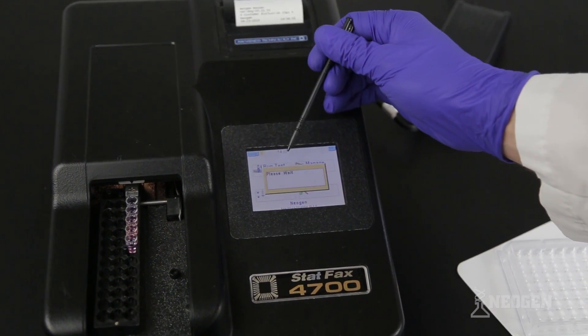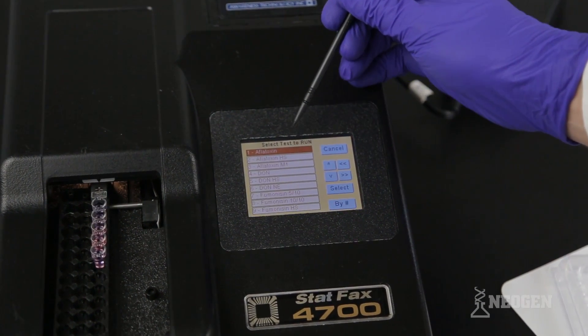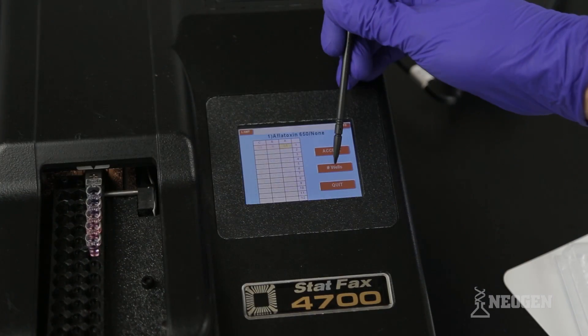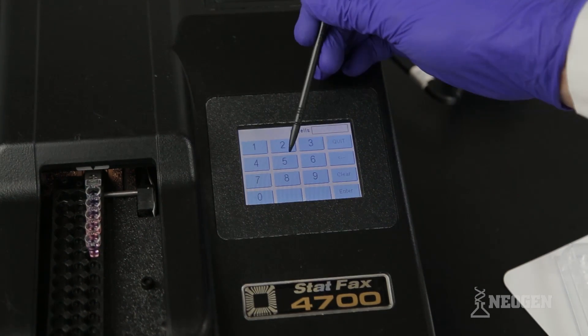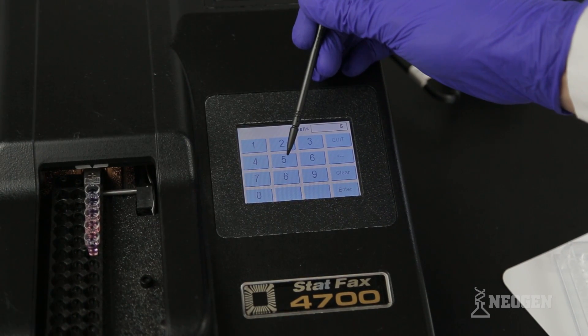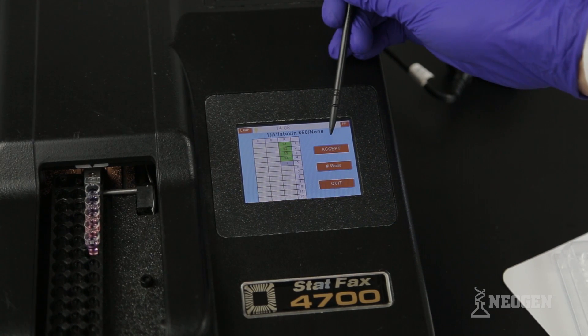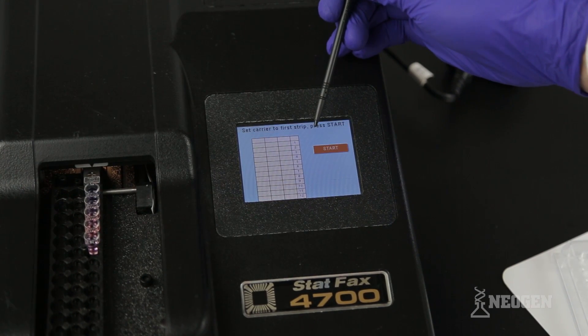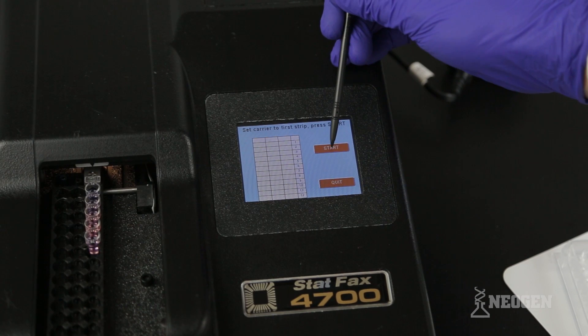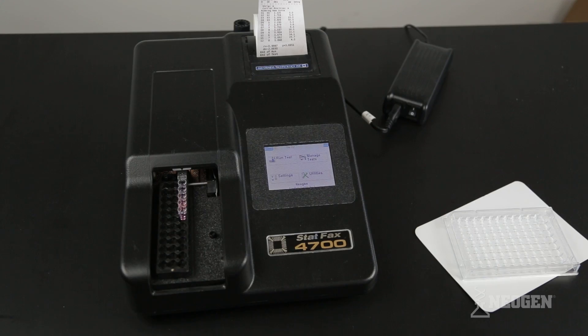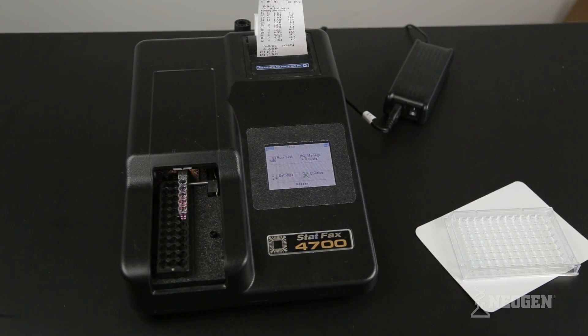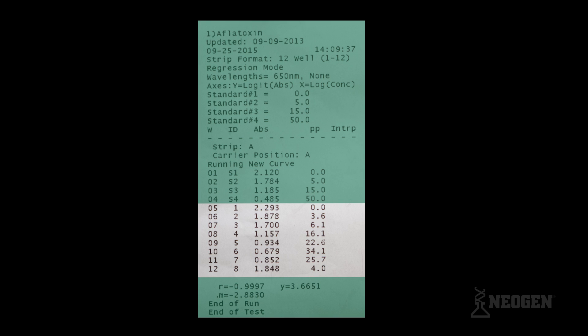Select Run Test. Select Total Aflatoxin. Select the number of wells you want to be read, then push Enter. Select Accept. Select Start.